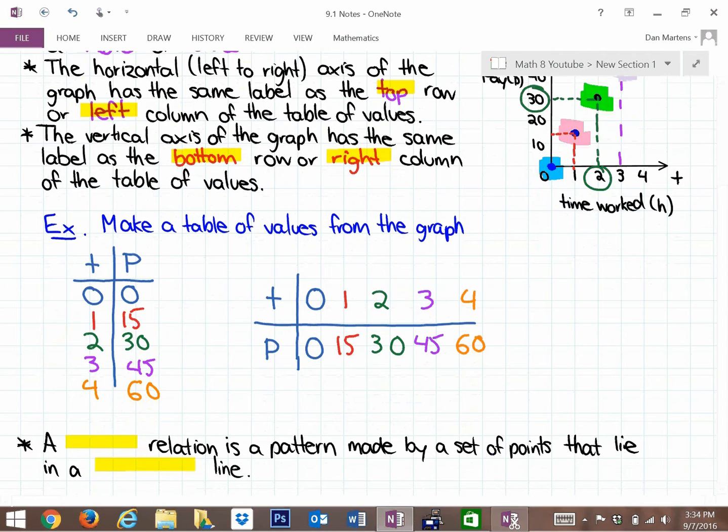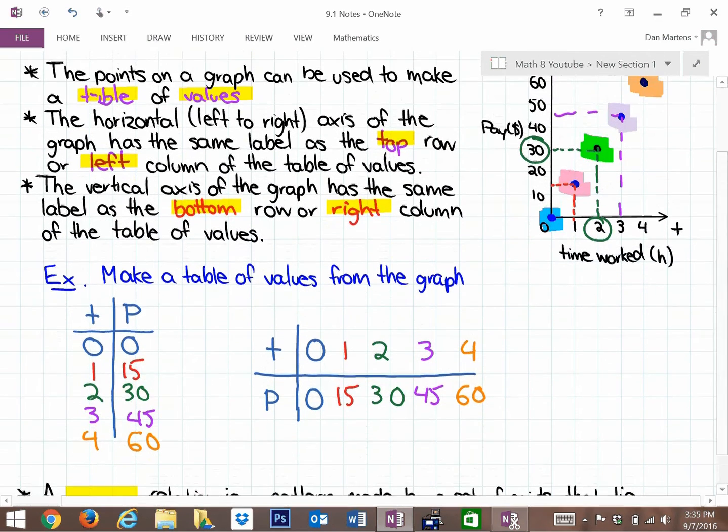What you also want to notice here is that graphs actually give you information. The information this graph gives is how much money you get, or how much pay you get, based on how many hours you work. What we learn from these numbers is if you don't work any hours, you get no pay. If you work one hour, you get 15 dollars. If you work two hours, you get 30 dollars. If you work three hours, you get 45 dollars. If you work four hours, you get 60 dollars. That's the way that this particular graph relays information.